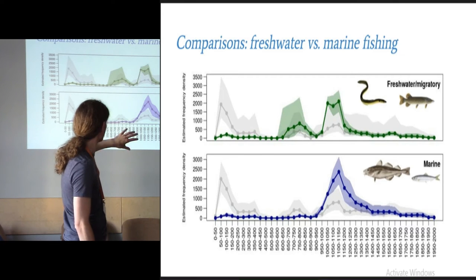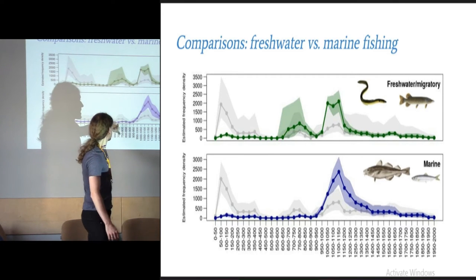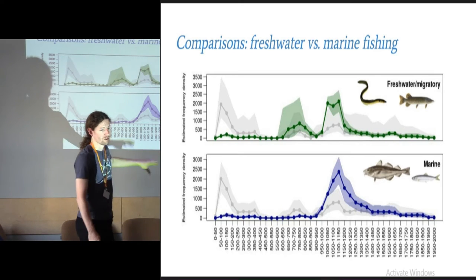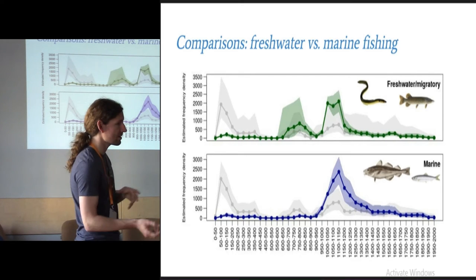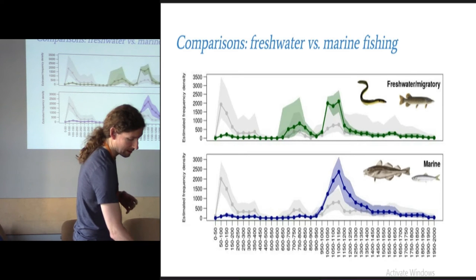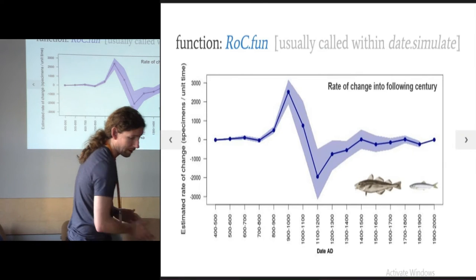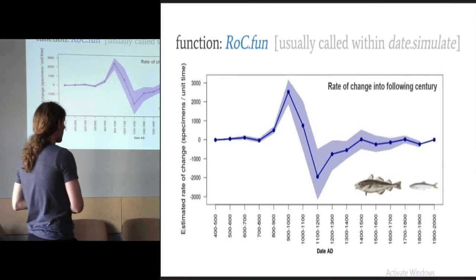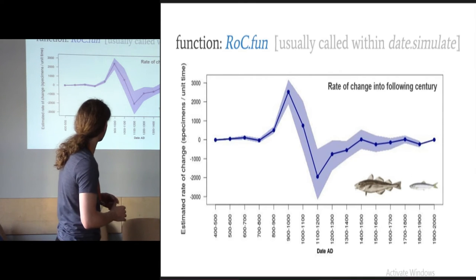What I'm actually interested in is looking at the onset of marine fishing. You can also obviously do comparisons. This is comparing freshwater fish at the top with marine fish at the bottom. You can see that in the early medieval period, the Saxon period, you get freshwater fish. There's a reasonable amount of sampling being done. You still don't get any marine fish. So it's confirming that that effect is not just the result of poor dating and it's not just the result of research biases.